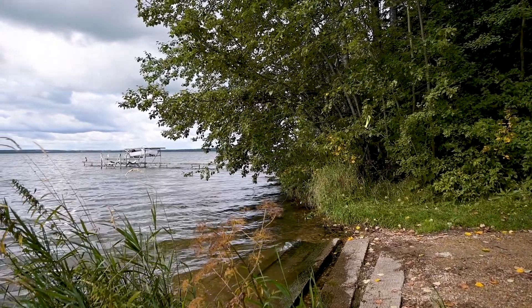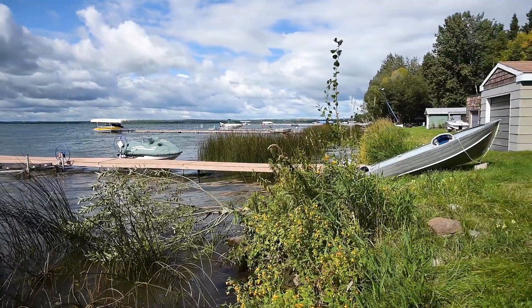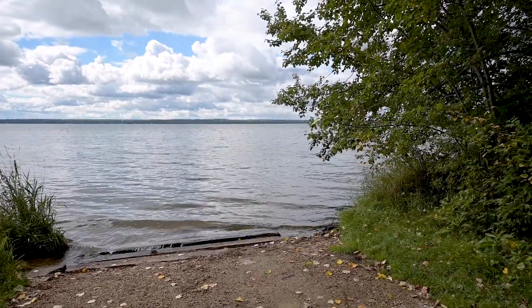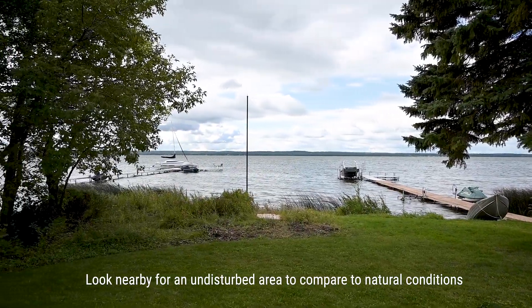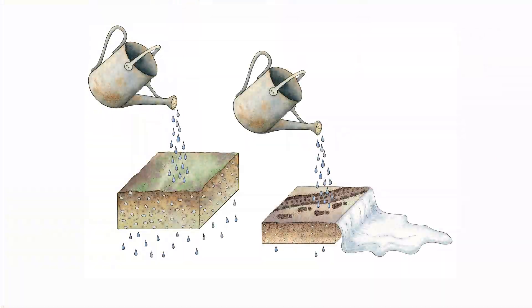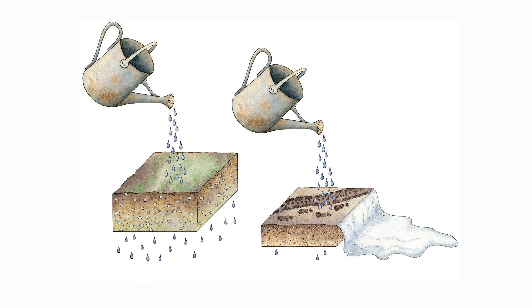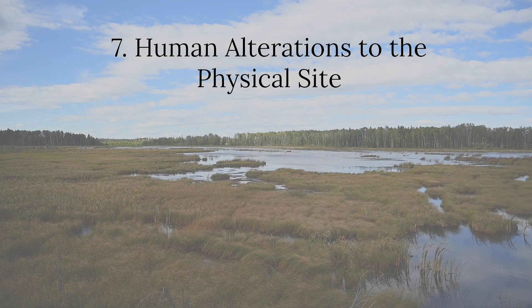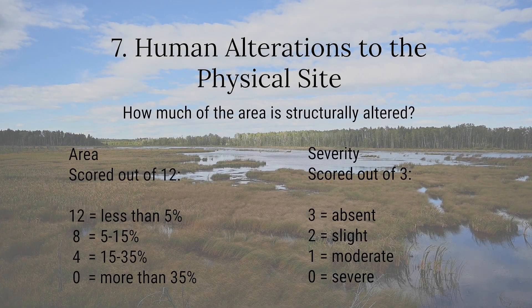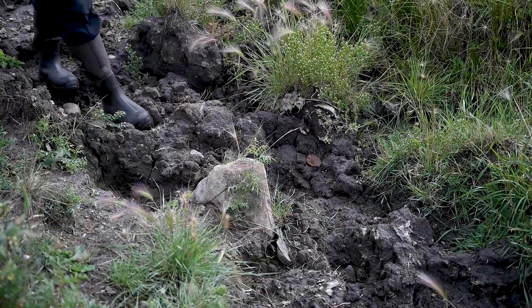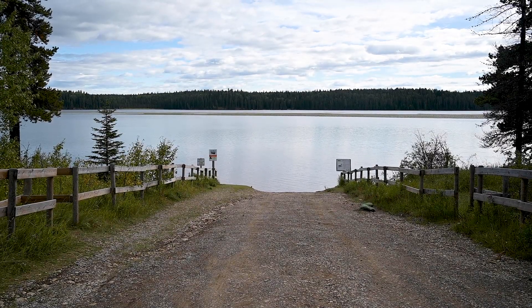Next, we need to assess how much of the plant community has been changed from its natural state as a result of our activities. Changes to structural layers and species in the plant community disrupt riparian functions. Common things to look for include areas where native plants have been replaced by non-native plants, where some tree and shrub layers are missing, as well as where cattails or bulrushes have been removed. We also need to consider the foundation that supports healthy plant communities: the soil and the hydrology of a site. The next indicators assess the physical health of the riparian area. When our land use alters the shape or contour of a site, creates hard surfaces, or compacts the soil, we reduce the ability of riparian areas to absorb and store water and support plant growth.